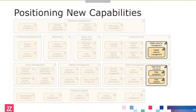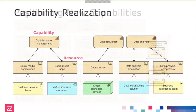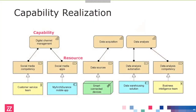The next step is to identify how these capabilities might be realized. We have these three sub-capabilities from the previous picture, and then there are some resources needed. This picture is simplified — you will need more resources as well. On the left, for digital channel management, you need social media competency and social media apps. The competency might be realized by your customer service team having the right skills, and the social media apps might be realized by things like the 'My Arc Insurance' mobile app — these are examples of how you model this realization.